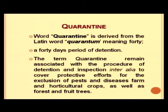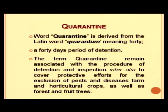The word quarantine has been derived from the Latin word 'quarentum' meaning 40. It stands for a 40-day detention period to maintain isolation and understand what pests and diseases are associated with the plant. The term quarantine remains associated with the procedure of detention and inspection to cover protective efforts for the exclusion of pests and diseases from farm and horticulture crops as well as forest and fruit trees.